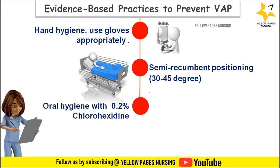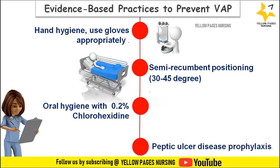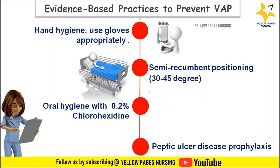Next comes peptic ulcer disease prophylaxis, also called PUD prophylaxis or stress ulcer prophylaxis. Generally H2 receptor blockers or proton pump inhibitors are given in order to increase gastric pH and minimize bacterial colonization, which reduces the risk of VAP and GI bleeding.